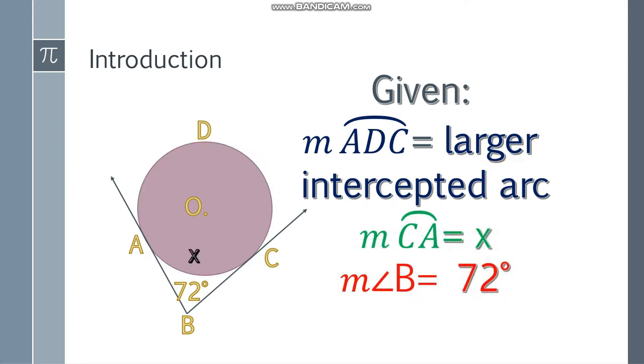So let's just let x be one of the intercepted arcs. I'll put x in the measure of arc CA. So that will be x. And how about arc ADC? Remember, in a circle, the measure of the circle is 360 degrees.